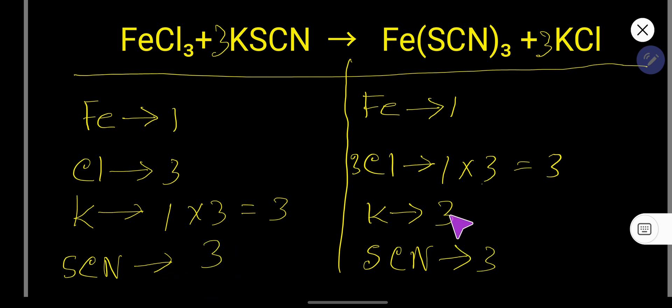So now cyanide 3, 3, potassium 3, 3, chlorine 3, 3, and iron 1, so you can say that this is the balanced chemical equation.